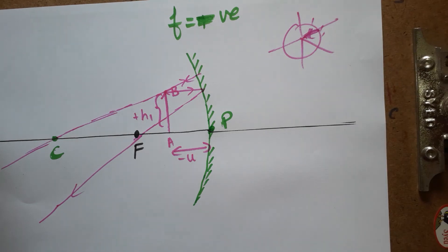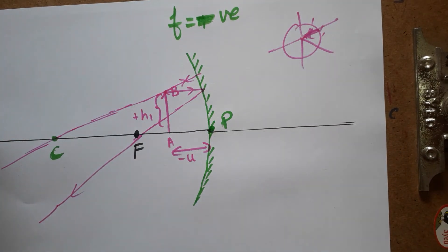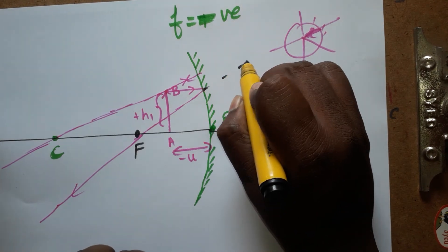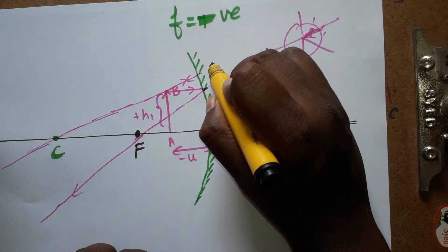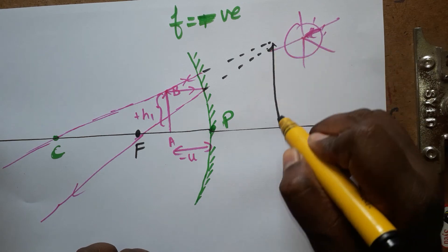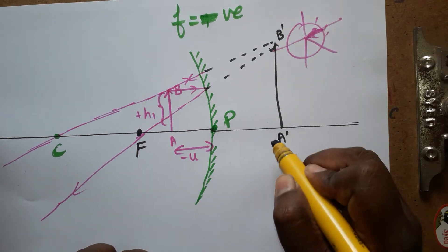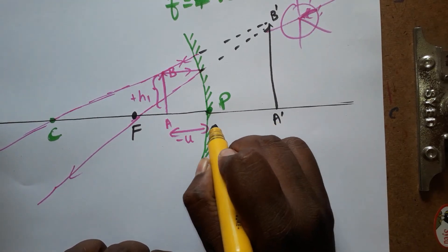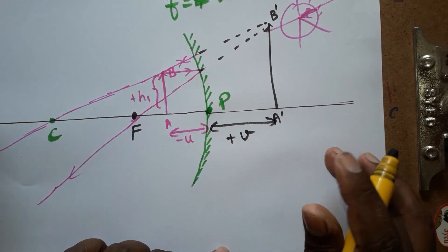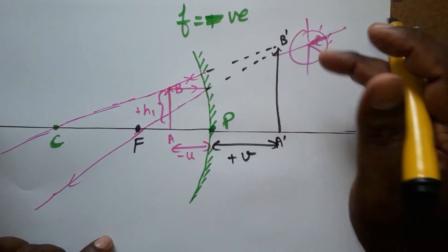The reflected rays are divergent, and when extended behind the mirror they converge. The image is finally formed at A'B'. The image distance v is on the right side of the mirror, so v is positive.